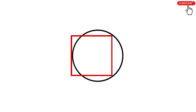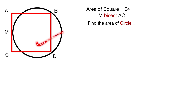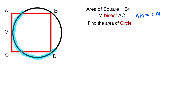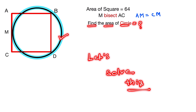Hello everyone, welcome back. Today we are going to solve this question. This is square ABCD and the area of the square is given as 64 units. AC is a side of the square and point M bisects AC into two equal parts, so AM is equal to MC. We have to find the area of the circle.